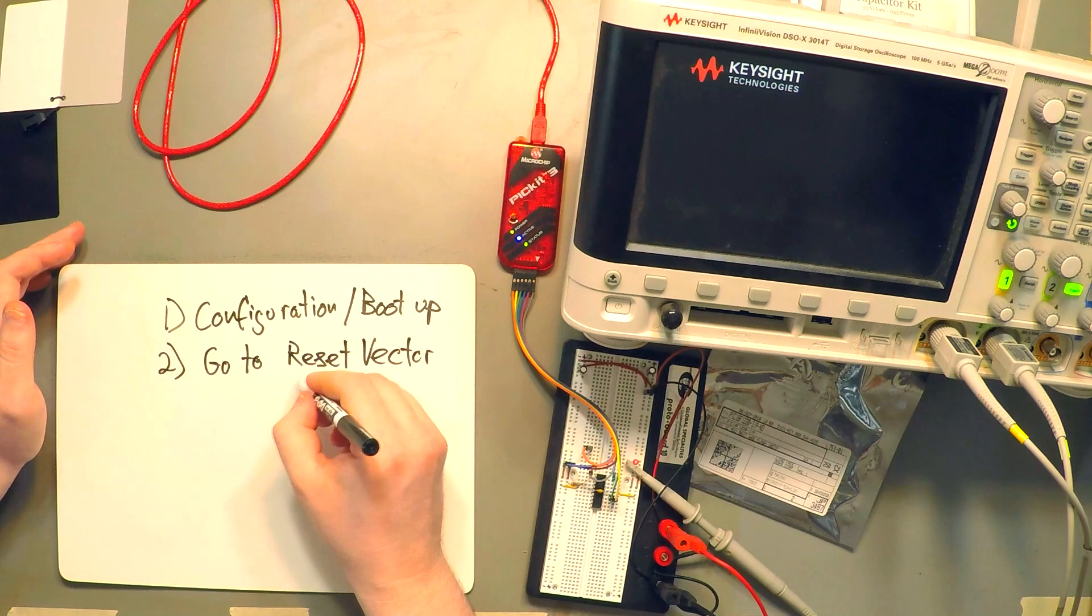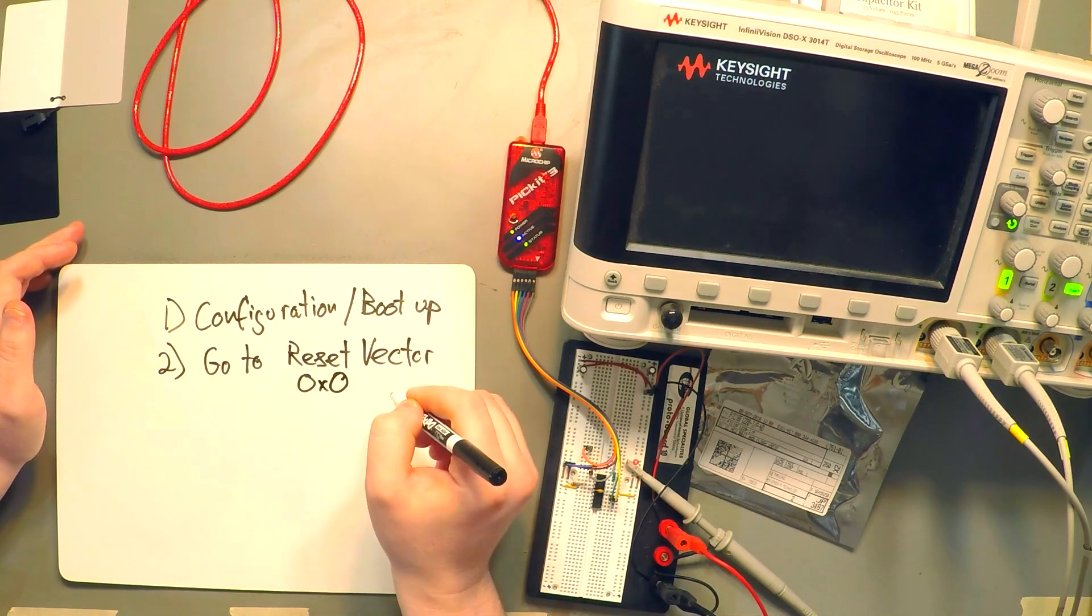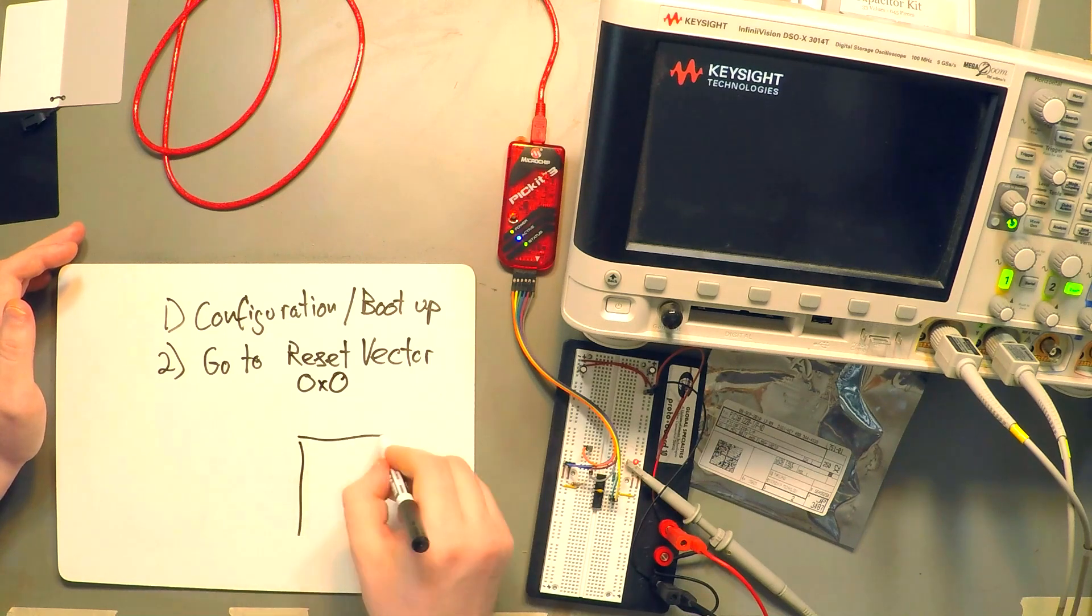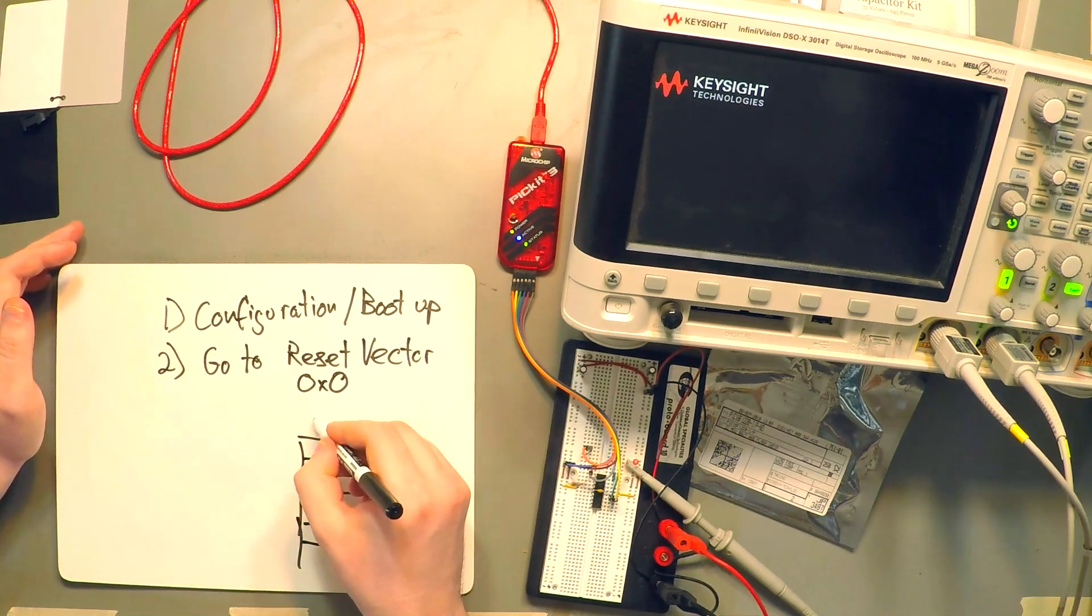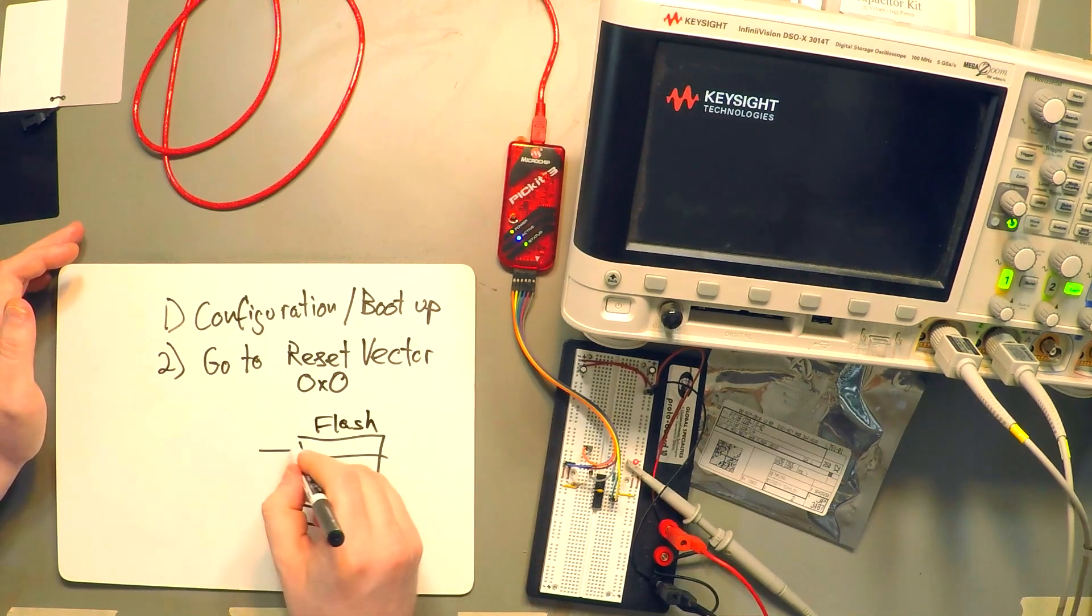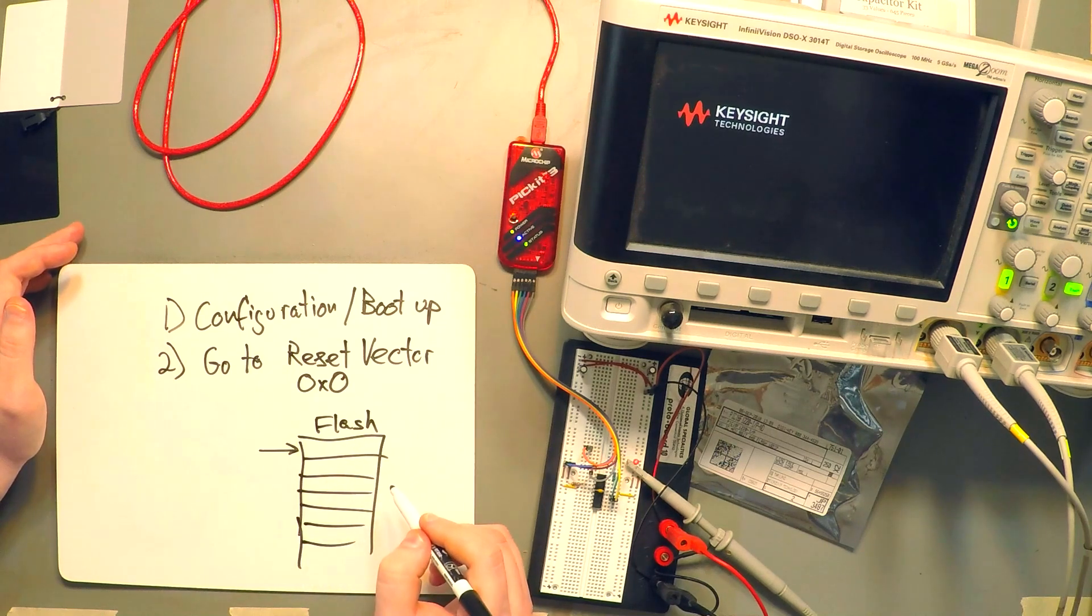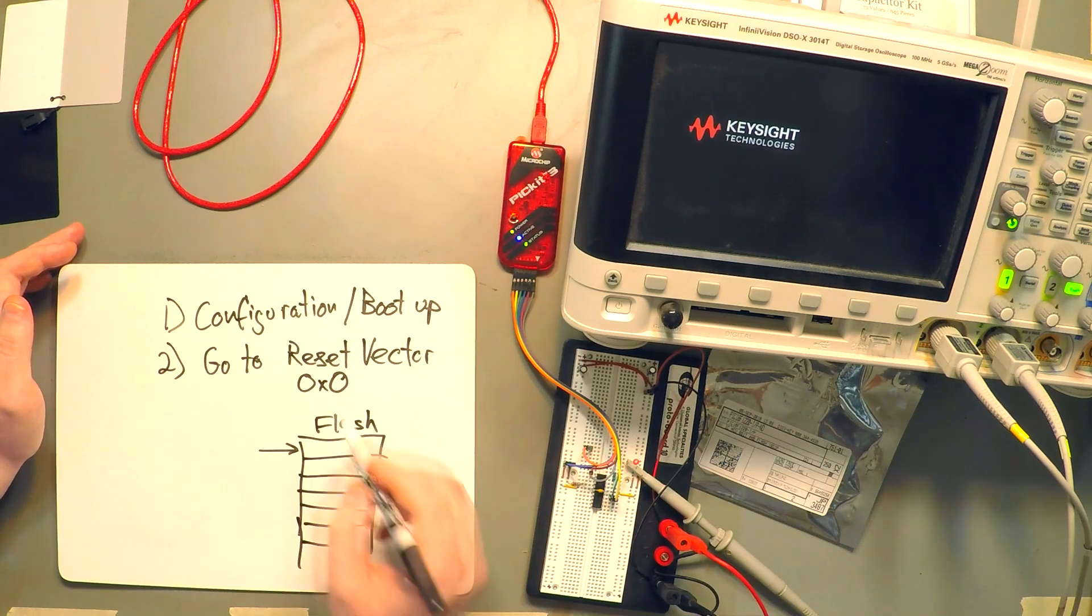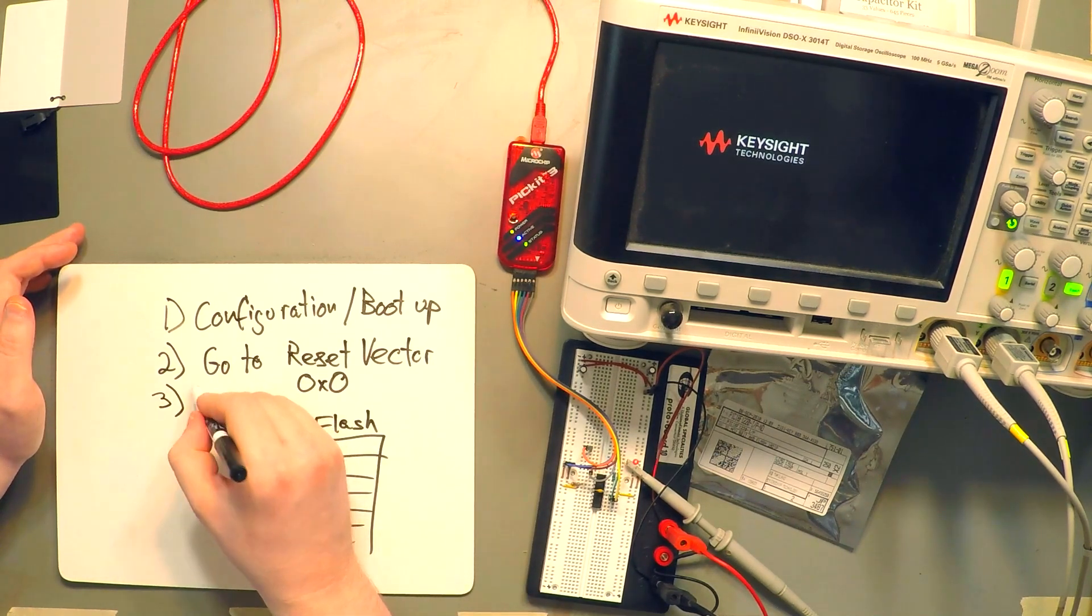So this reset vector is actually some address in memory. So on the PIC, the address is actually 0. So in our flash memory bank here, this is our flash, it's going to go to address 0, so the first address, and it's going to just start executing instructions. And so it goes to reset vector and then execute.